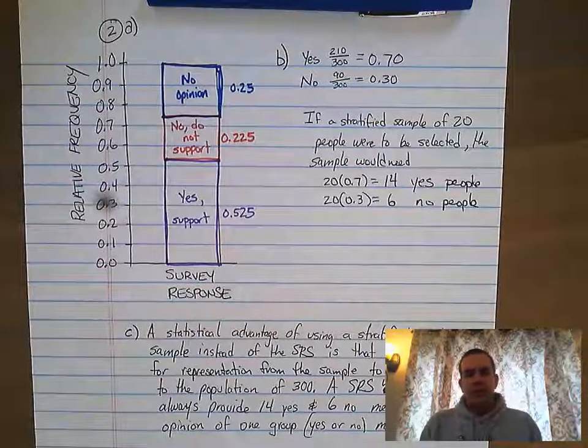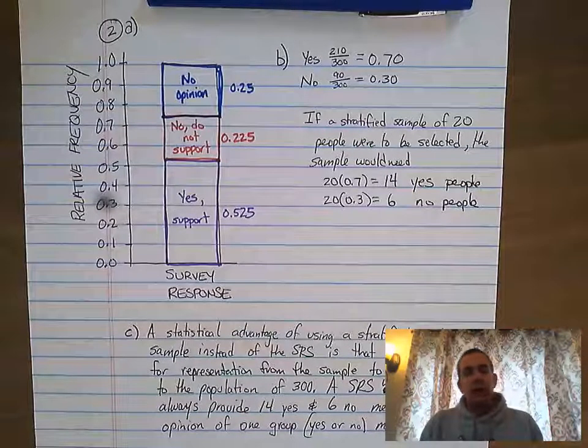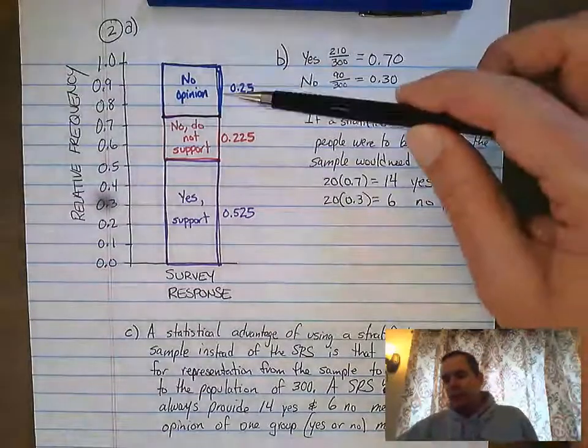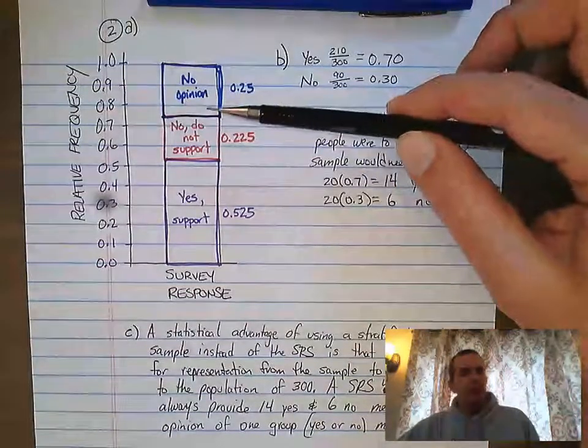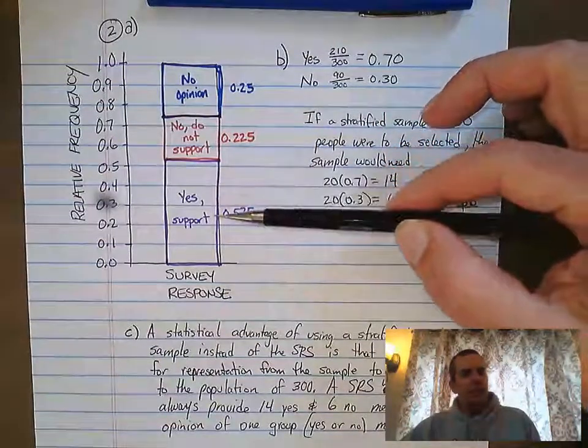Moving on to question 2 in the progress checks for unit 3. It asks you to fill out this bar, turning it into a segmented bar chart. They gave us some numbers in the table and asked us to fill in the ranges.